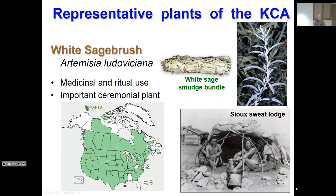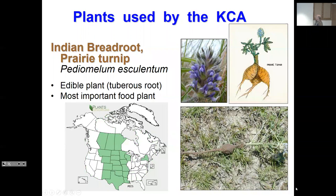White sagebrush — Artemisia ludoviciana — very, very well known, including in this region. There's a Plants database map showing it's widely, widely used across the country. Indian breadroot is the last of these I'll show — a very critical plant. It's still fairly abundant in the Northern Plains, so a lot of the Sioux include it in their ceremonies, but it's getting much more difficult to find in the Southern Plains. A very important edible.